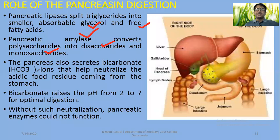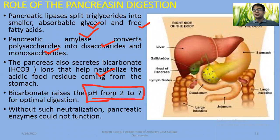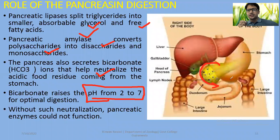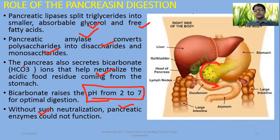The pancreas also secretes bicarbonate ions that help neutralize the acidic food residues coming from the stomach. Bicarbonate raises the pH from approximately 2 to 7. In the stomach it is highly acidic, and when the chyme enters the small intestine, it is necessary to neutralize it, because the pancreatic enzymes and small intestine enzymes work at alkaline pH for optimum activity. Without such neutralization, the pancreatic enzymes could not function properly.